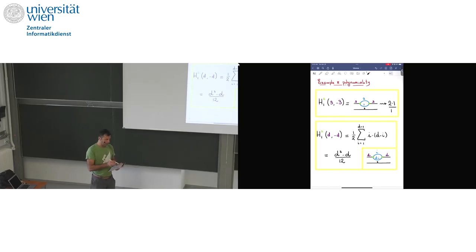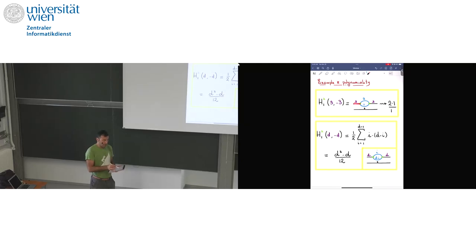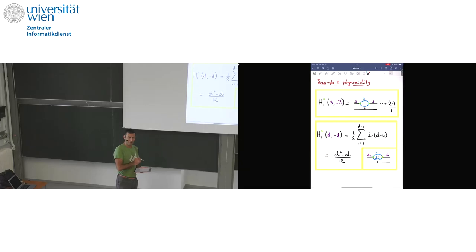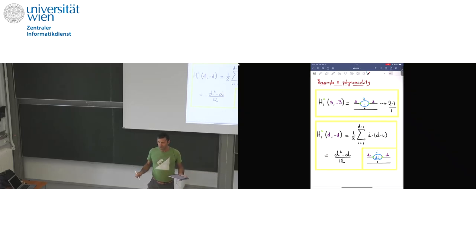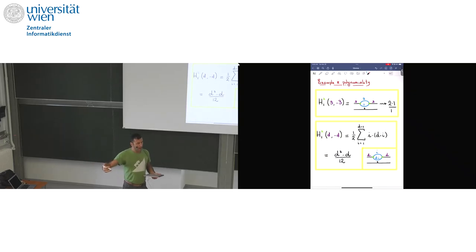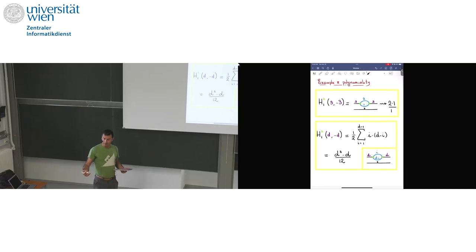One example: if I look at genus one, degree three with two full ramification points and two simple ramification points, the only graph I need to count is this candy graph with multiplicity two times one, so this Hurwitz number is two. You can verify this by counting monodromy representations. But now you can ask: is this algorithm a really efficient way to count Hurwitz numbers? Like if you want to count Hurwitz numbers of degree 27 and some arbitrary ramification, you're going to start drawing these trees — and the answer is no. It's a very complex algorithm. But one of the advantages it has is that it shows some structural properties of Hurwitz numbers, like piecewise polynomiality, in a very simple way.